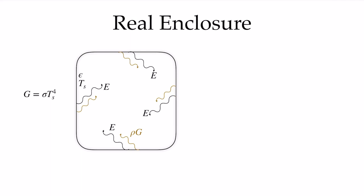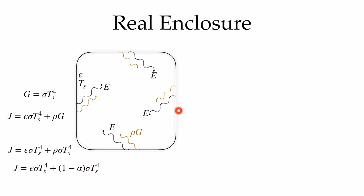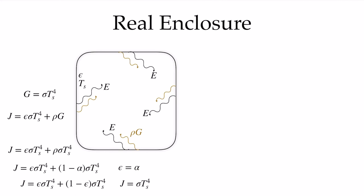Let's see what it means if this enclosure has an irradiation field that is that of a black body. The radiosity is that emission — emissivity times the black body emission — plus the reflectivity times the irradiation. The irradiation is sigma T_s to the fourth, and the reflectivity is one minus the absorptivity for an opaque surface. If the emissivity is equal to the absorptivity, we can replace that term with one minus epsilon, and we can see that the radiosity is, as it should be, the black body radiation expected in this enclosure — and the radiosity equals the irradiation, as expected.